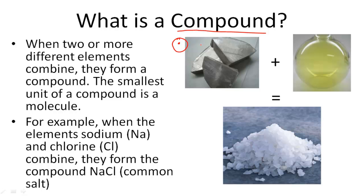The smallest unit of a compound is called a molecule. For example, when the elements sodium here, which is Na, and chlorine over here, which is Cl, when they combine,